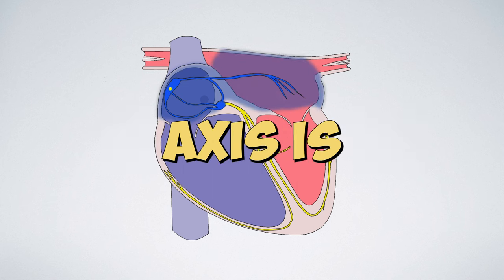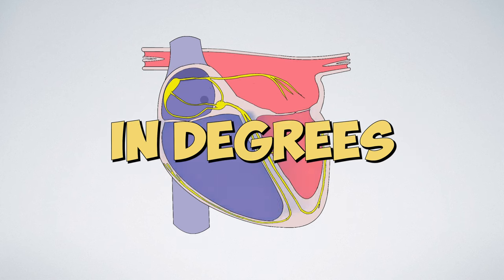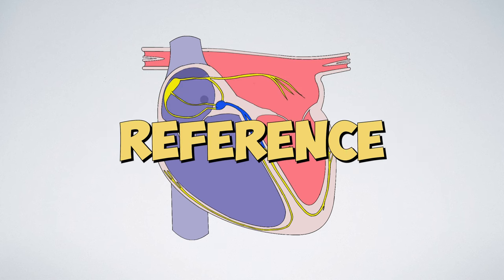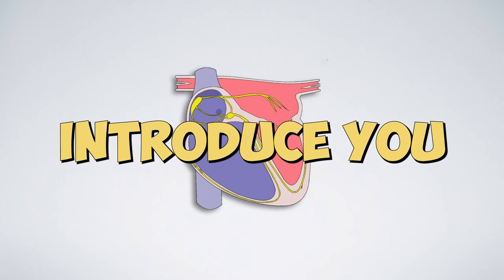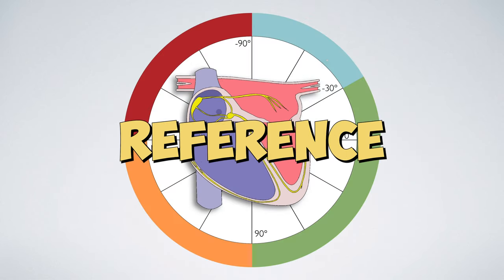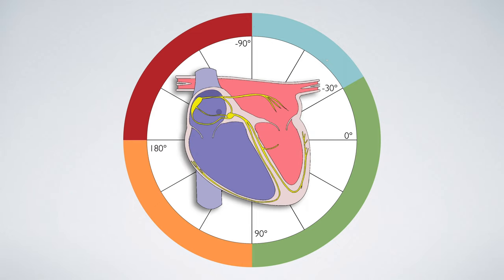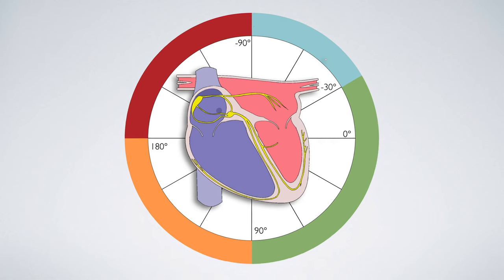The cardiac axis is measured in degrees so we need to add some reference points to our exploration. Let me introduce you to the hex axial reference system. This amazing system gives us 360 degrees of reference points.